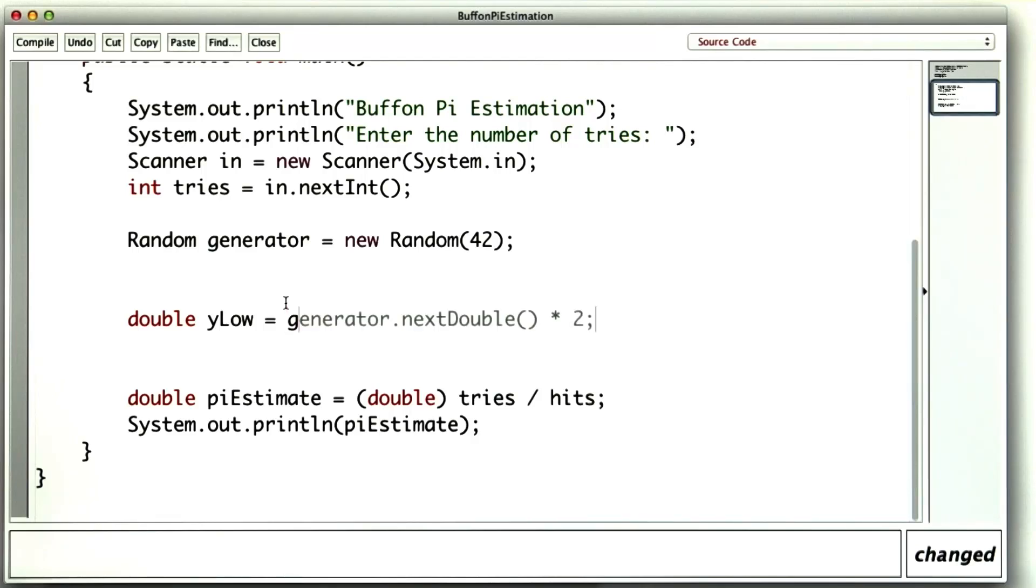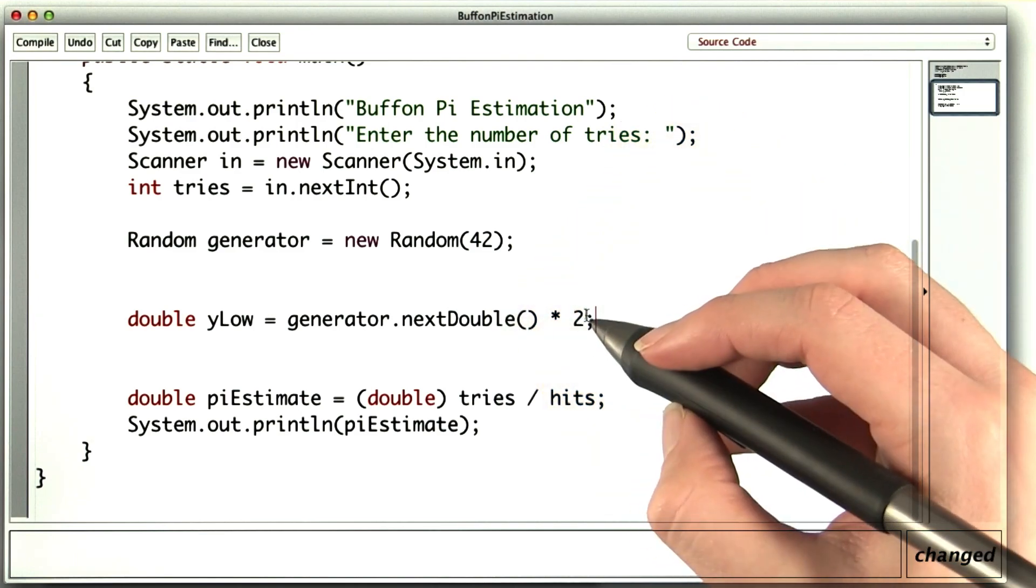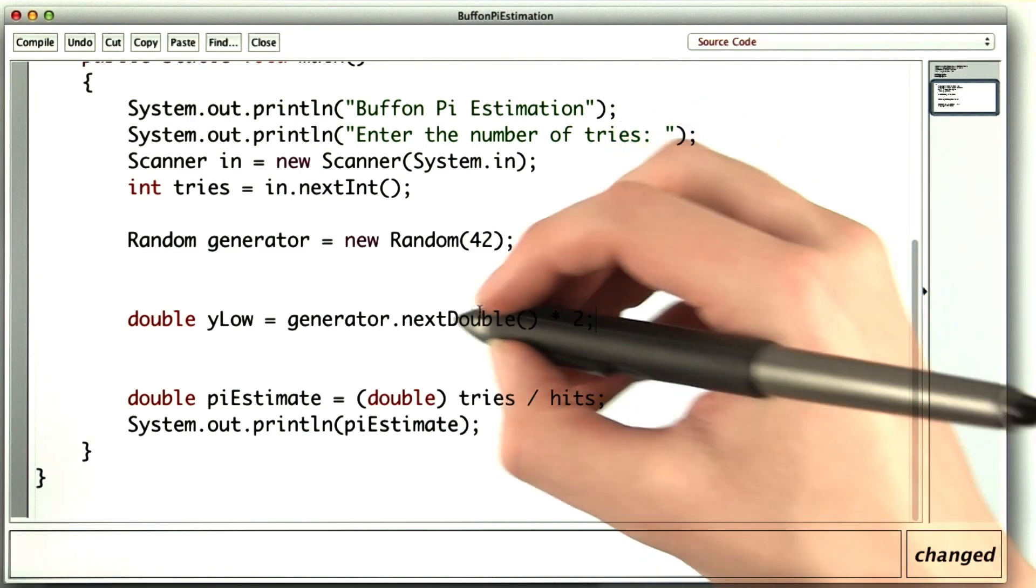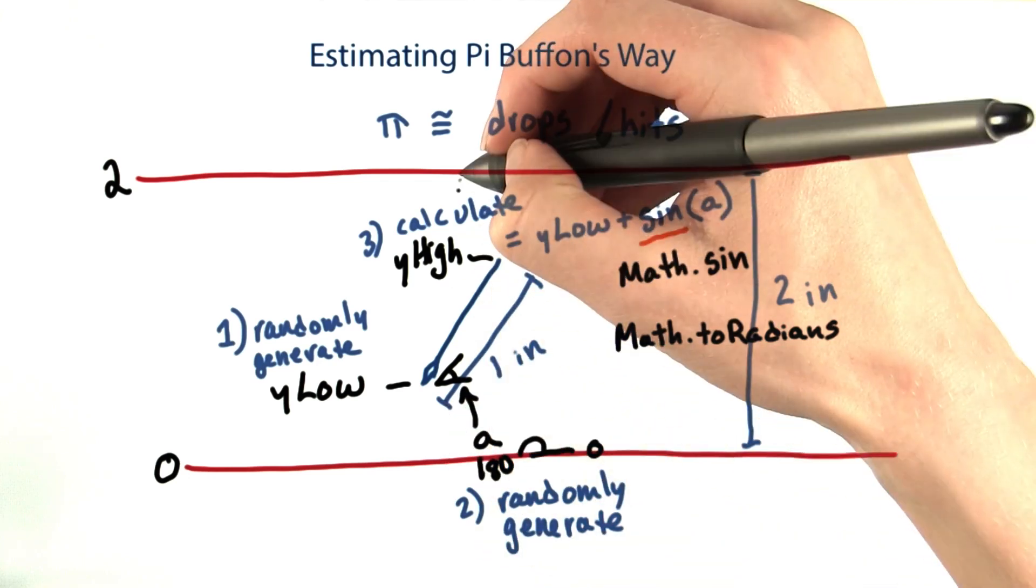First, I want to generate a y-low. Next, double will give me something between 0 and 1. But I want it to be between 0 and 2. And I definitely want a double because y-low could be anywhere between 0 and 2.